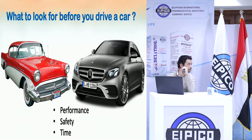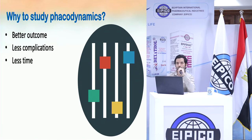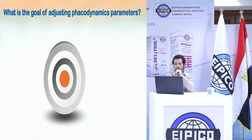This is the same concept when we are considering phacodynamics. You want your surgery to have a better outcome, so you want to use the least phaco power possible in order to protect the ocular structures. You also need to have less incidence of complications — that is what safety means — and you need to perform the phaco emulsification in less time, which will also decrease the amount of power delivered into the eye.